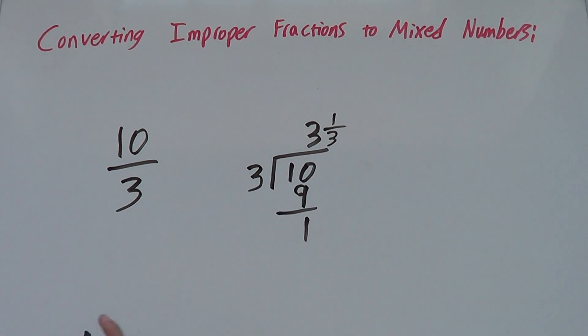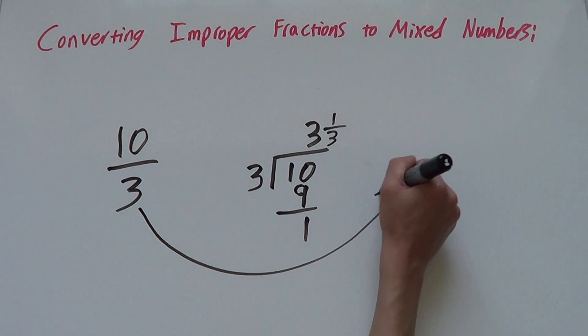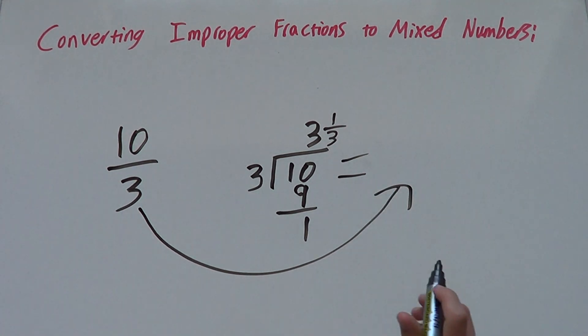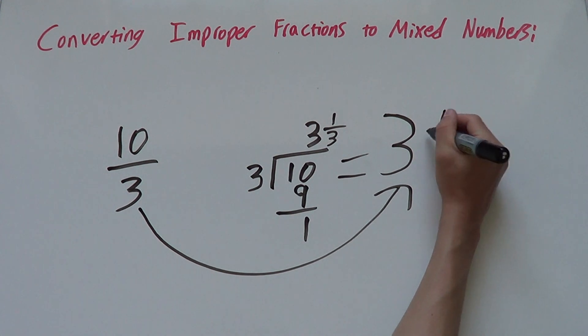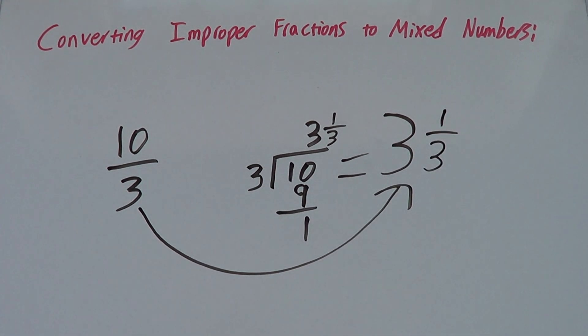So when we turn 10 over 3 into our mixed number, it will be 3 and 1 third. Let's look at another example.